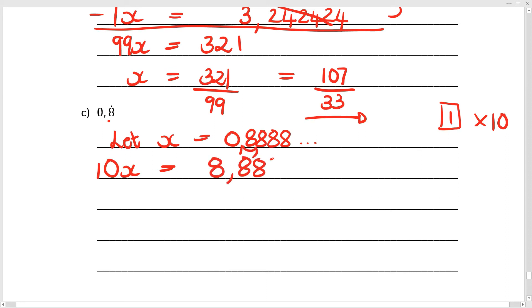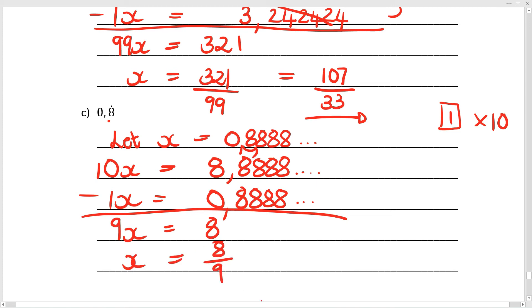And then I'm going to subtract 1x, which is 0. Line it up underneath very nicely: 0.8 recurring. And now I do subtraction on both sides. 10 minus 1 gives me 9x. 8 minus 0 gives me 8. So x equals 8 over 9. Did you get that one?